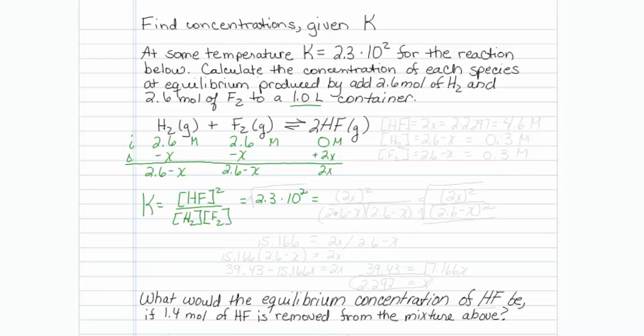Now it's just a matter of finding what x is. So HF we've represented as 2x, so this is 2x squared. And over here we have 2.6 minus x and 2.6 minus x representing the H₂ and the F₂ concentrations. We need to solve for x. Now I do notice that I can simplify this a little bit. If I have 2x quantity squared on top, I can combine what's on bottom to 2.6 minus x also squared.